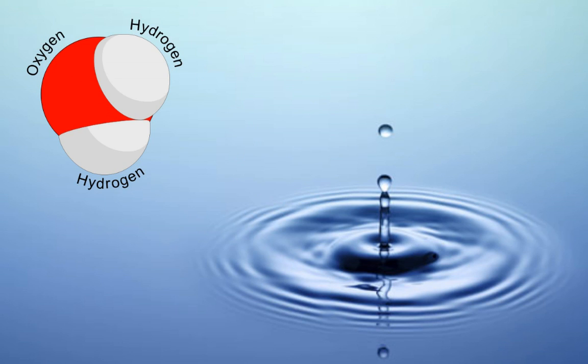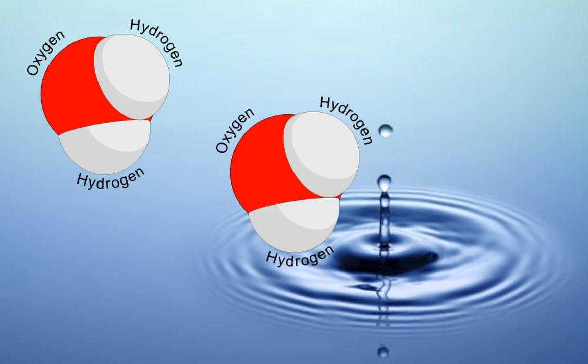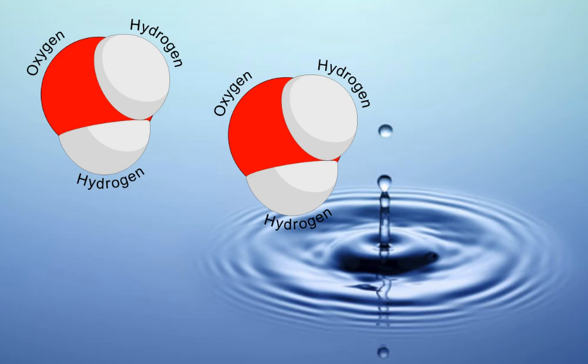Now what does that mean? How does that polarity of the water molecule actually contribute to its properties? Well, we have to put another molecule of water in here to see why that matters. So here I have another water molecule, and I'm going to orient it in a certain way. And let's see why this polarity makes a difference.